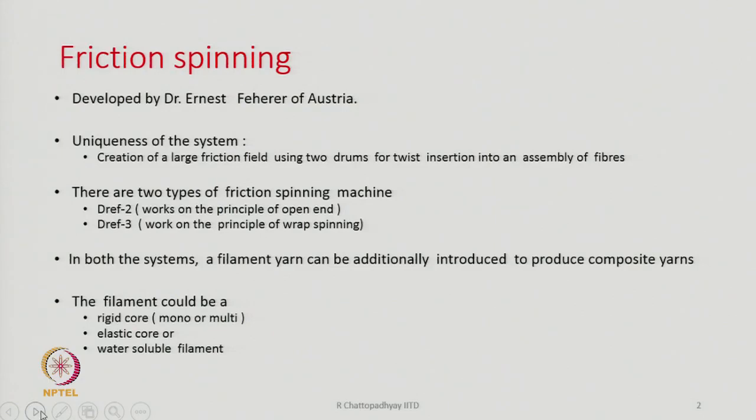That sort of flexibility exists — we can always add an additional yarn. This yarn, preferably a filament, could be either a filament with a rigid core which could be mono or multi-filament, an elastic core material, or a water soluble filament. All types of filaments can be incorporated at the center of the yarn, covered by another fiber, to produce composite yarns. This is possible on both drape 2 and drape 3 technologies.